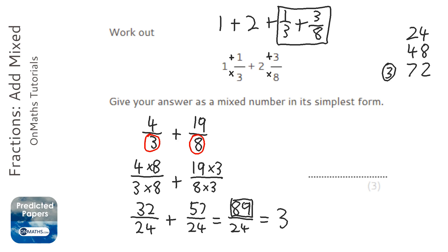So how many have we got left over? Well 89 take away 72 would be 17 over 24. So my answer would be 3 and 17 over 24.